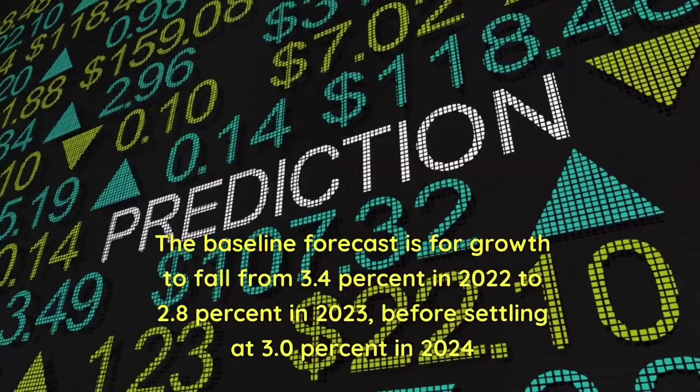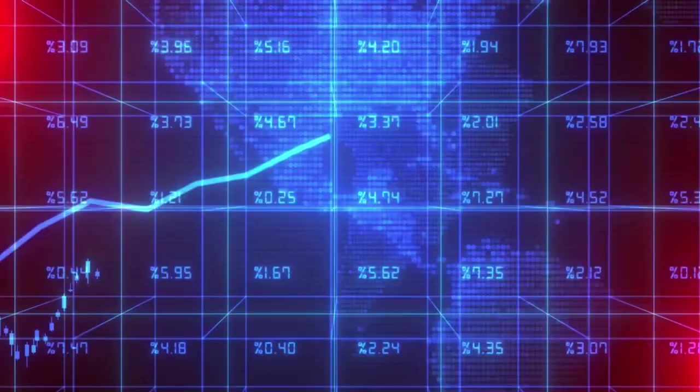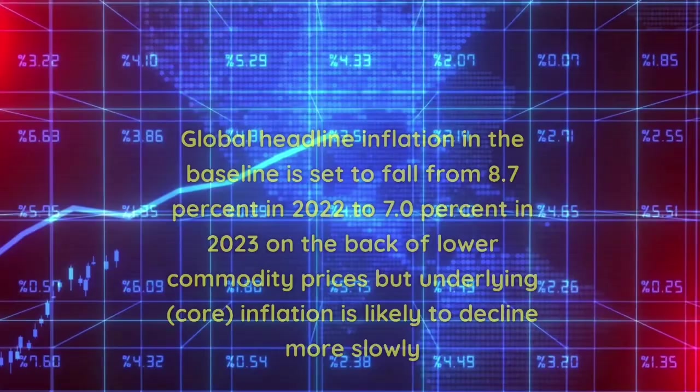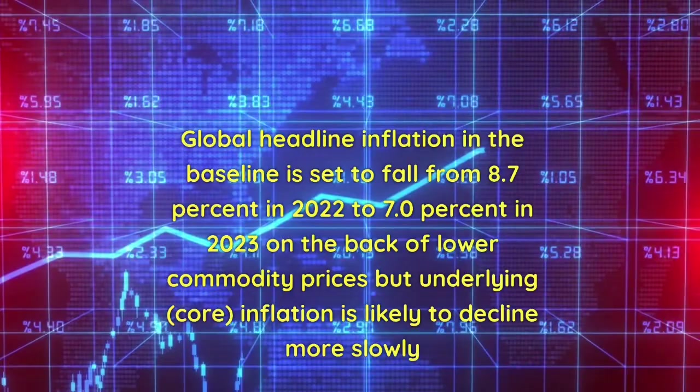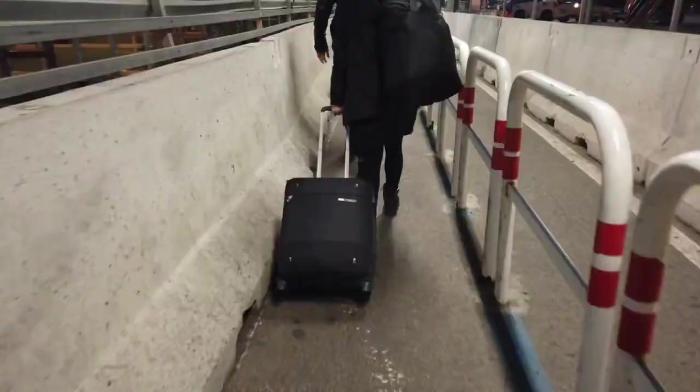Advanced economies are expected to see an especially pronounced growth slowdown, from 2.7% in 2022 to 1.3% in 2023. In a plausible alternative scenario with further financial sector stress, global growth could decline to about 2.5% in 2023, with advanced economy growth falling below 1%. Global headline inflation is forecast to fall from 8.7% in 2022 to 7.0% in 2023, but core inflation is likely to decline more slowly, with a return to target unlikely before 2025 in most cases.